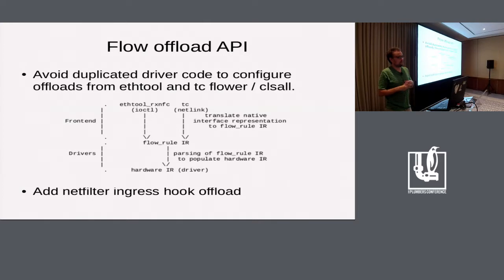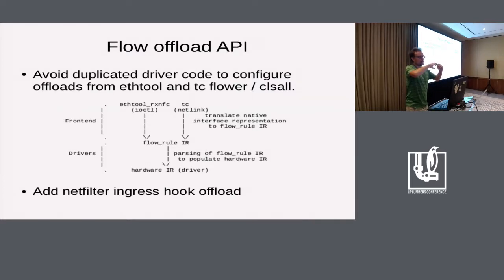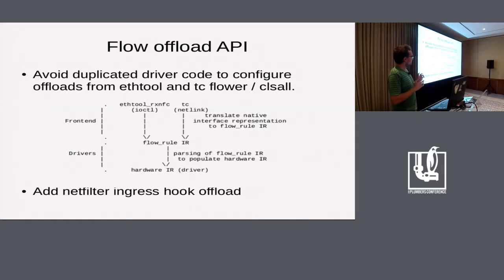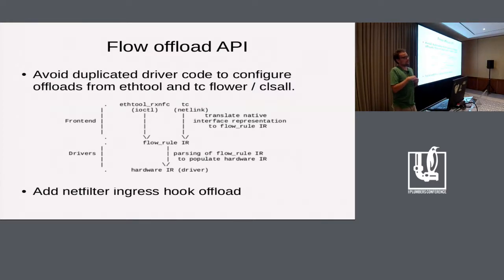If there is a common representation both for ethtool and TC that drivers could use, then code could be consolidated. At the same time, we would open up for more offloads — in this case, for Netfilter. It would be relatively easy to make the frontend transform its native representation into this intermediate representation and push it to the driver, without the driver distinguishing where the representation is coming from.